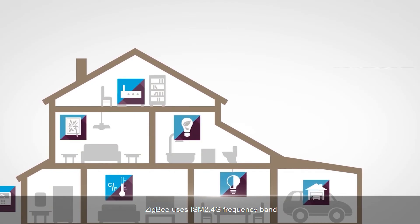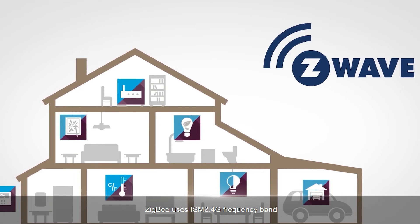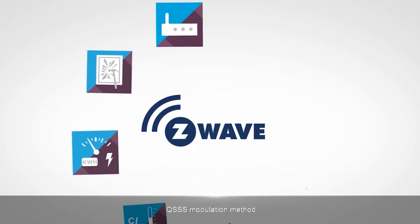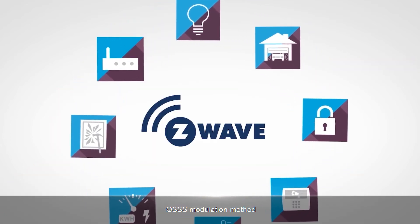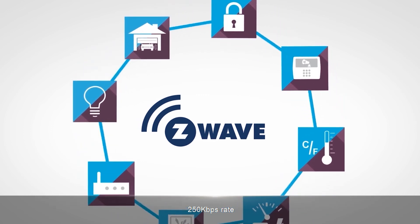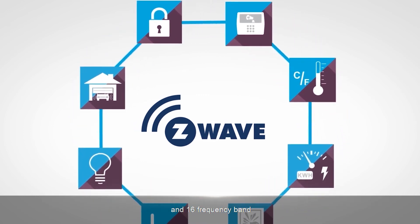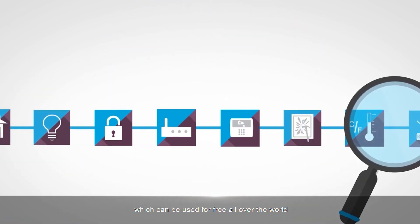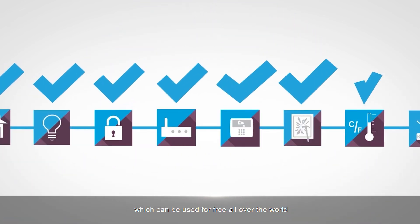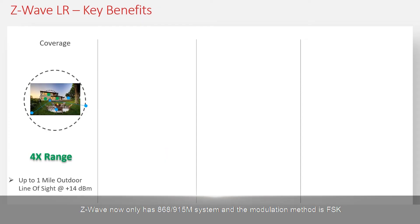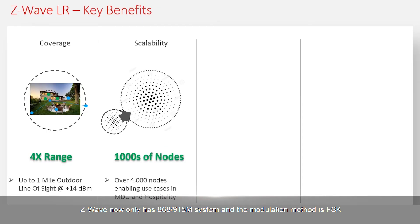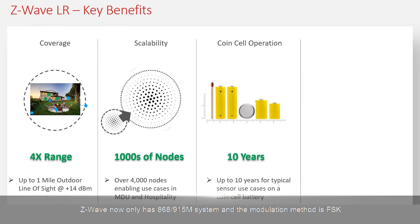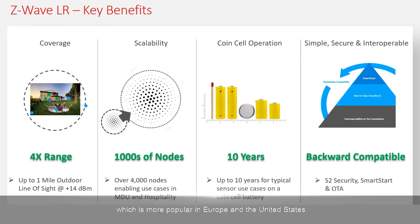ZigBee uses the ISM 2.4 GHz frequency band, OQPSK modulation method, 250 kbps rate, and 16 frequency channels, which can be used freely all over the world. Z-Wave currently only uses the 868–915 MHz band and the FSK modulation method, which is more popular in Europe and the United States.